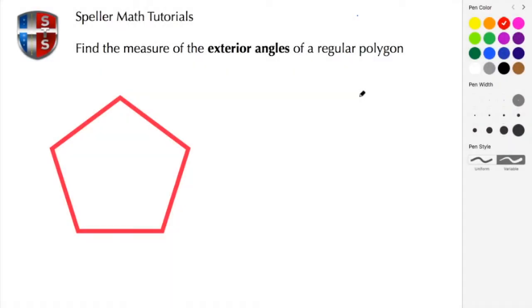All right, here we go. We need to find the measure of the exterior angles of a regular polygon. Here's a regular polygon. We know that a regular polygon is a polygon that has sides that are congruent, so I know that these five sides here are all the same length. We also know that the interior angles of this particular polygon are also congruent.